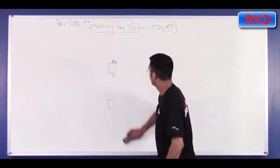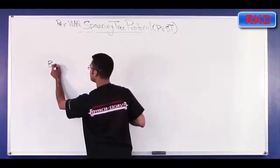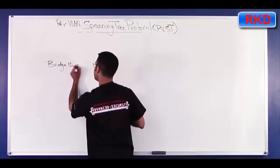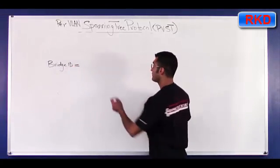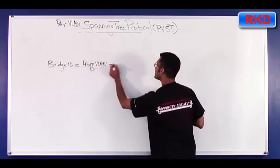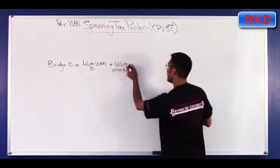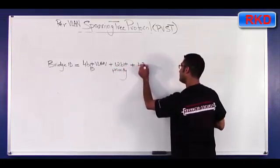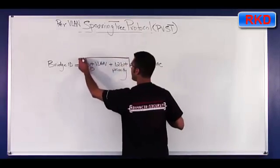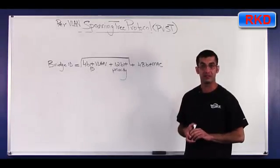Now, what else is different with per VLAN spanning tree? Well, the bridge ID field has been modified. So bridge ID now consists of a 4-bit VLAN ID plus 12-bit priority and then your 48-bit MAC. So your priority field actually has been split in two with the 4-bit VLAN ID and then a 12-bit priority.